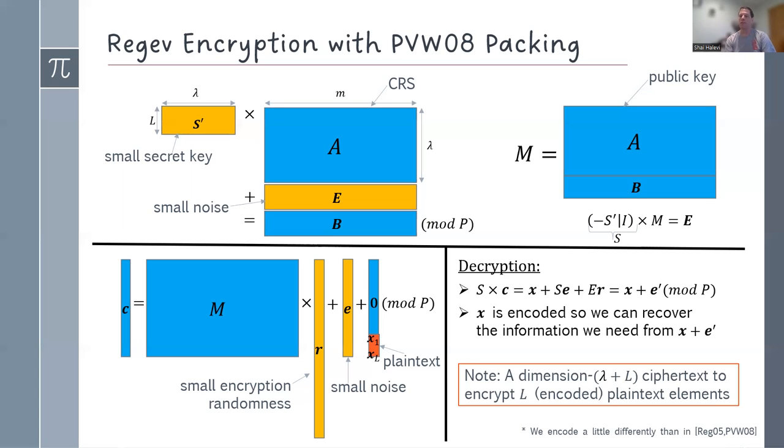In our case, the encoding that we use is a little bit different than what Regev was using, and it entails a 2x factor in bandwidth. And then the more L is relative to lambda, the closer you are to a factor 2 expansion ratio. This is why, when there are more parties, the bandwidth gets better.